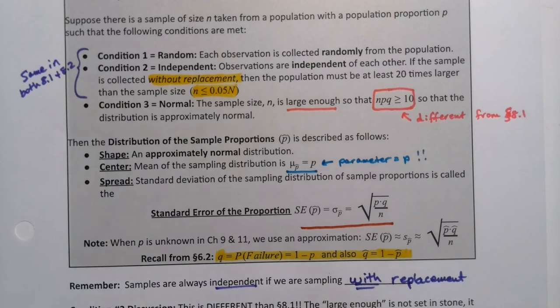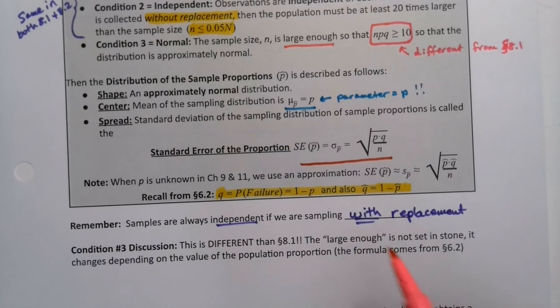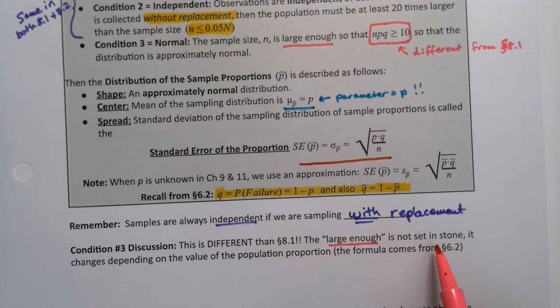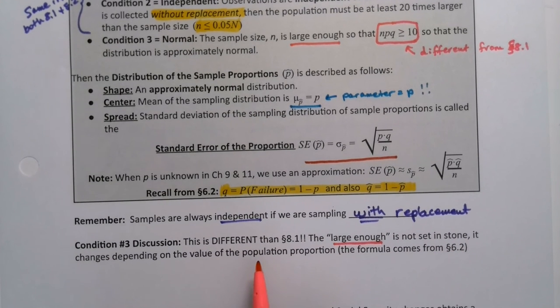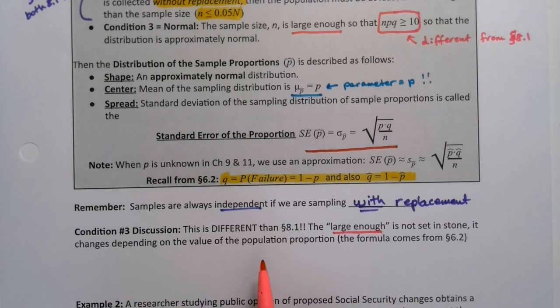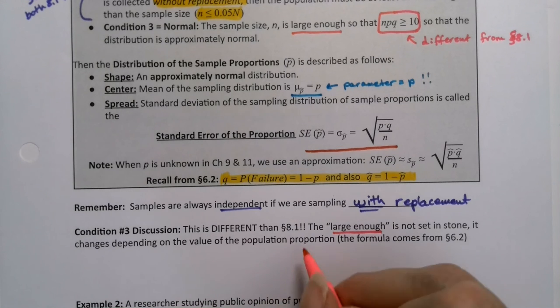Also note that if we're in chapter 9 and 10 and 11, we often don't have P and Q. We have P-hat and Q-hat, so you'd use those instead. But the idea still holds. So a couple of things. One, the whole large enough thing is not set in stone. It's not like section 8.1 where it was set in stone at 30.